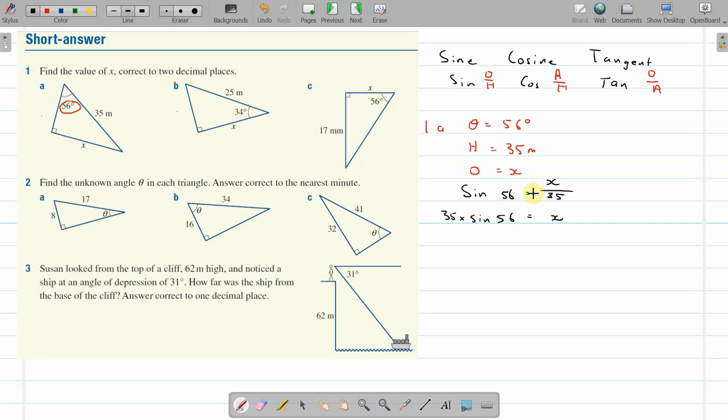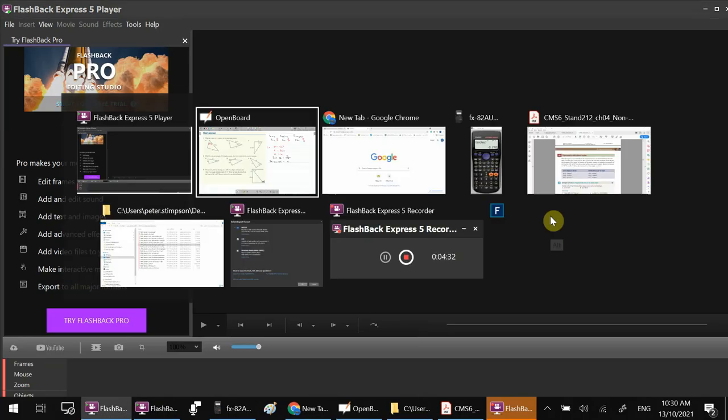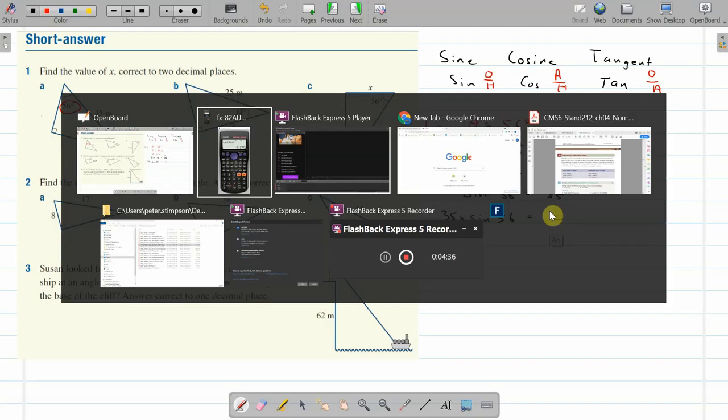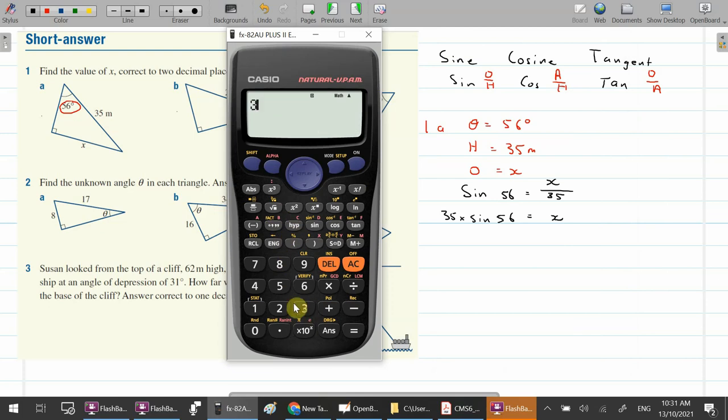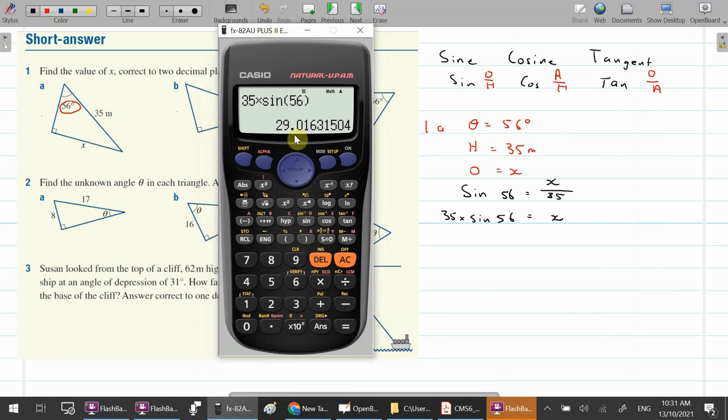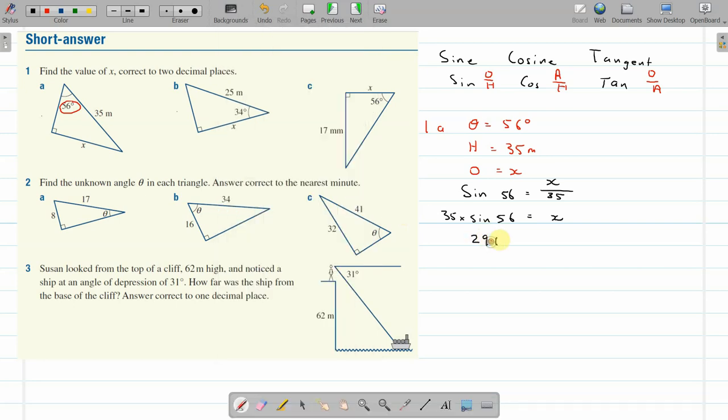35 times the sine of 56. So we just rearrange this into the calculator step. And that makes it x-isolated. 35 times the sine of 56. You don't need to put the degrees as a key. 29, two decimal places. 29.02 meters equals x.